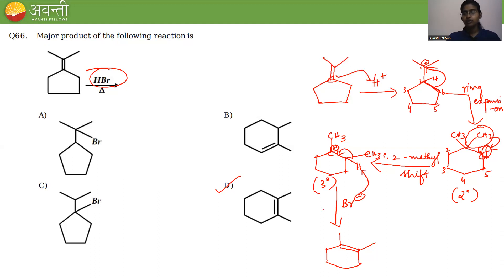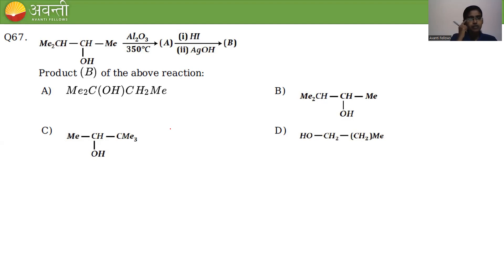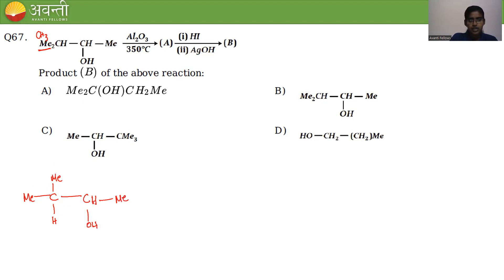Question 67: a compound is treated with Al₂O₃ at 350°C to give compound A, then with HI and AgOH to give compound B. The starting material has two methyl groups on C1 and one methyl on C2, with an OH group.